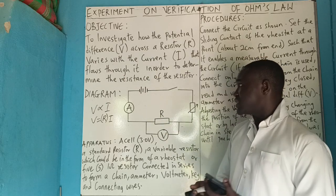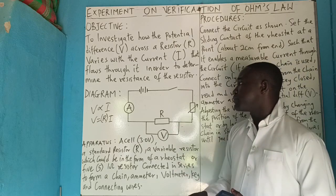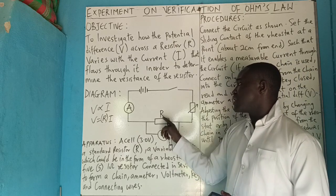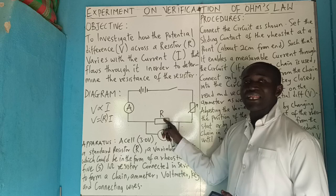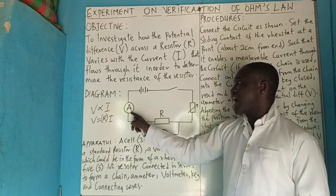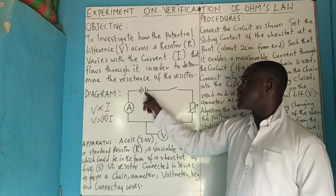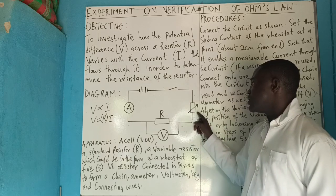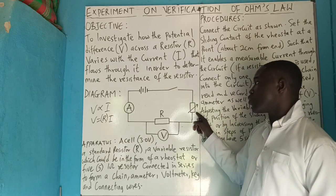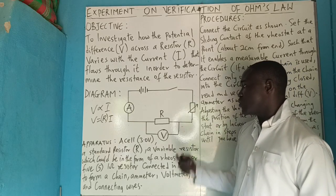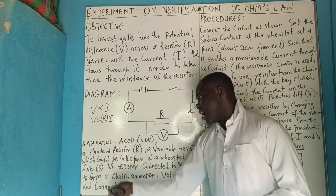This is the circuit diagram — the setup. Here we have the standard resistor, the ammeter, the cell, the key, the variable resistor which we call a rheostat, and the voltmeter. Now, look at the apparatus.